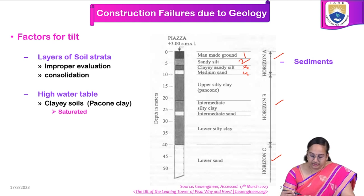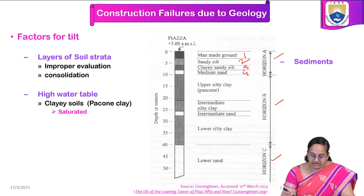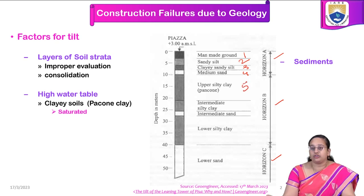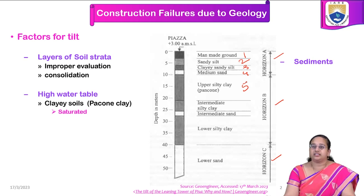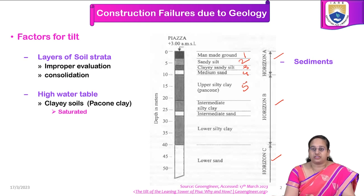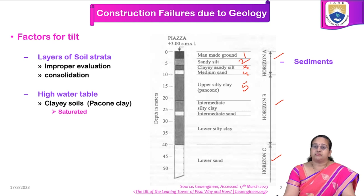At a depth of nearly 10 meters below the ground, we have silty clay, and more than 10 meters, upper silty clay is present up to about 20 meters below the surface. Because of this, the varied properties have to be studied in order to understand the geological strength required for construction at that location. Improper evaluation of the soil strata and improper consolidation — which was not sufficient at that location — also contributed to the tilt.